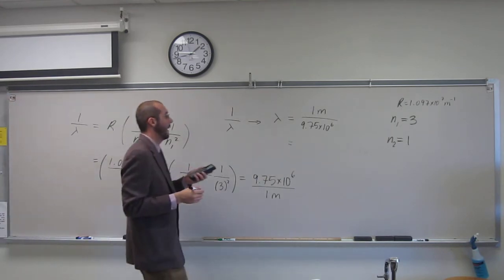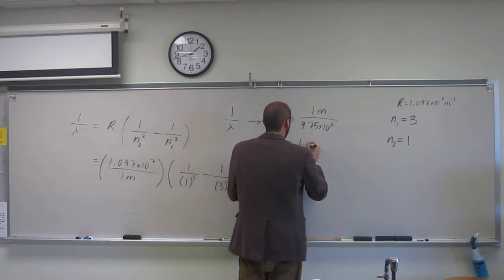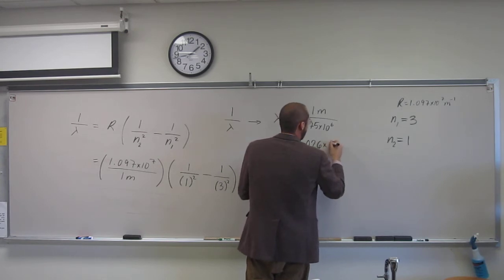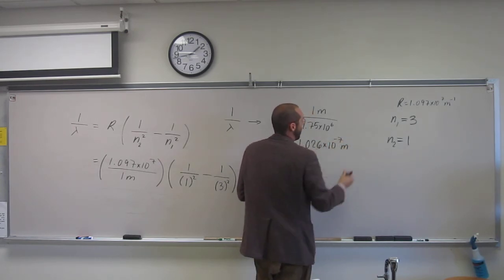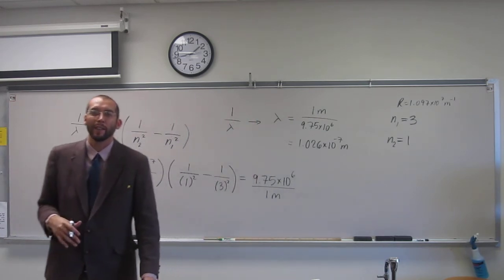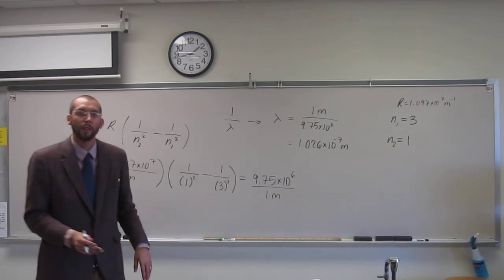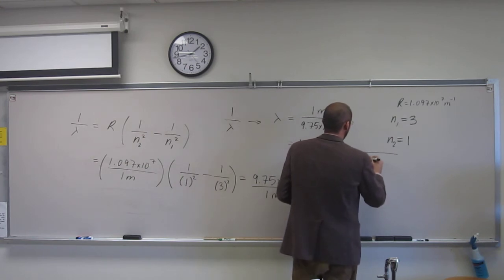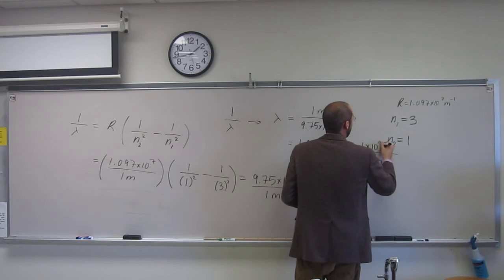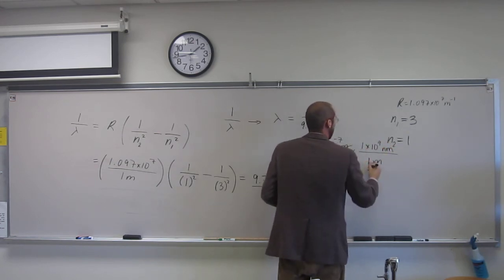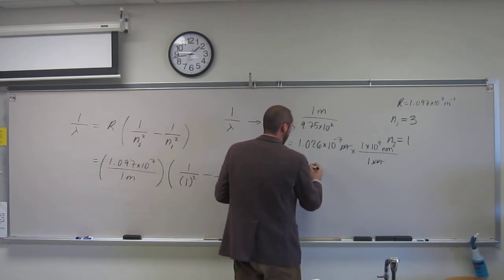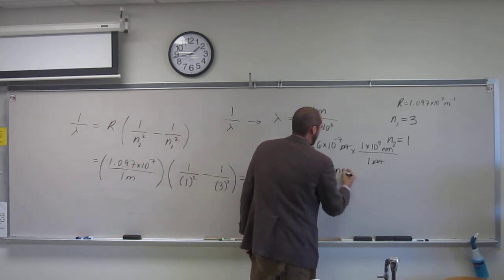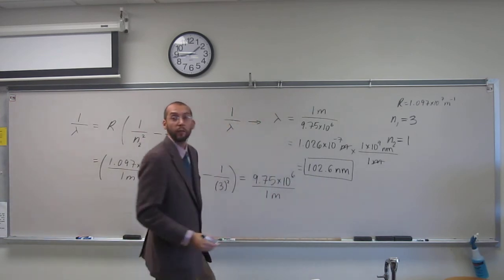So wavelength equals 1 meter divided by 9.75 times 10 to the 6. Is everybody okay with doing that? Okay, and then I get 1.026 times 10 to the negative 7 meters. But let's convert this into nanometers because it asks us what part of the electromagnetic spectrum this is in. So 1 meter is 1 times 10 to the 9th nanometer. So that's going to be 102.6 nanometers.